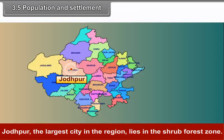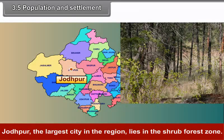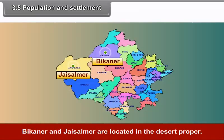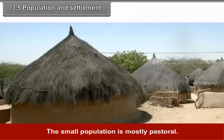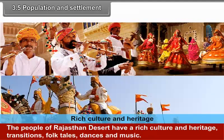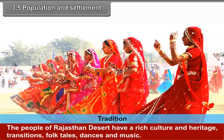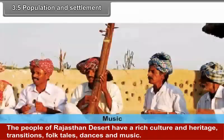Jodhpur, the largest city in the region, lies in the shrub forest zone. Bikaner and Jaisalmer are located in the desert proper. The settlement in the desert is nucleated, and the small population is mostly pastoral. The people of Rajasthan desert have a rich culture and heritage, traditions, folk tales, dances and music.